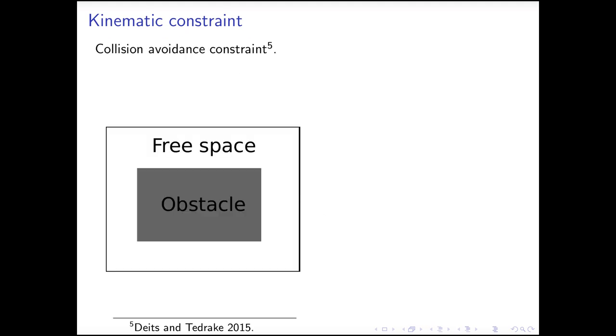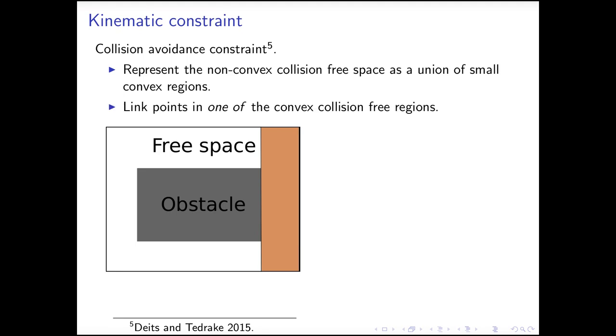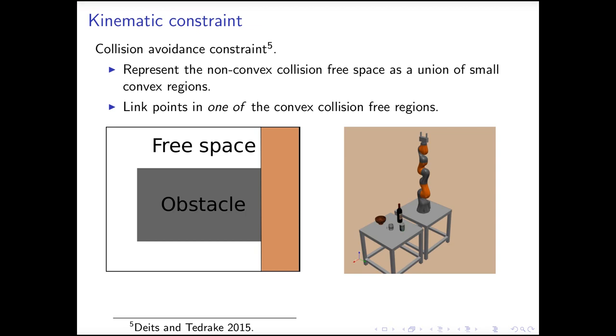Moreover, we can handle collision avoidance constraints. We do that by representing non-convex collision free space as a union of convex small regions, as shown below, and require that link points to be within one of the small convex collision free regions, which again can be formulated as a mixed integer convex constraint. There are many approaches to segment the free space. On the right hand side, we use a naive approach, to represent the free space as unions of bounding boxes.